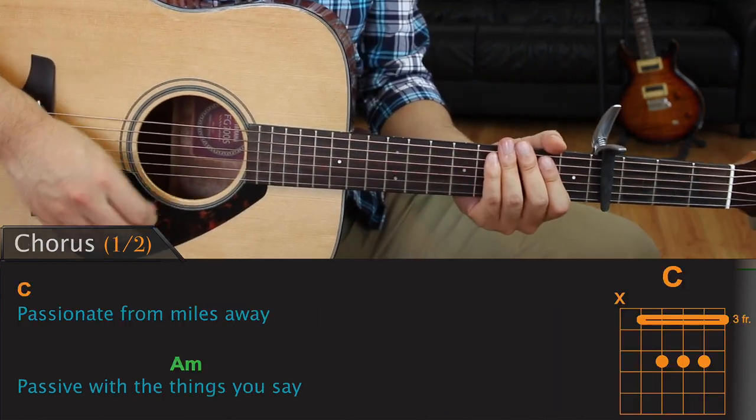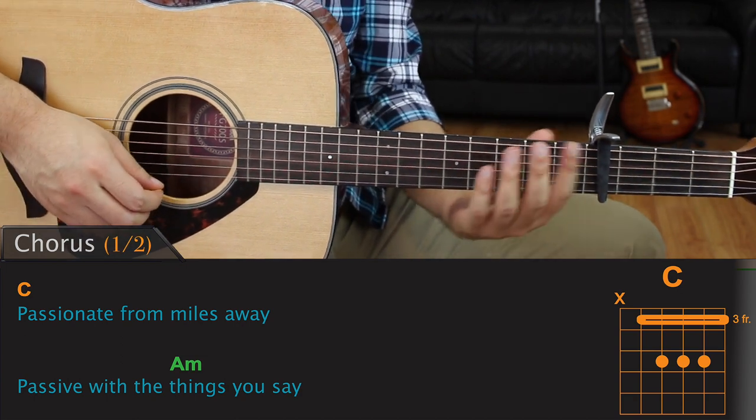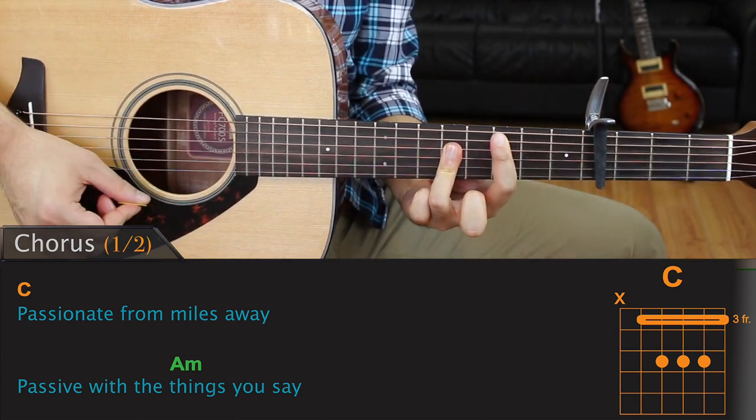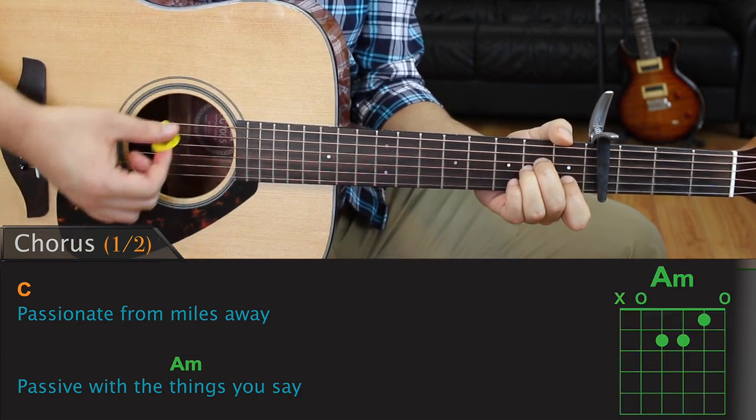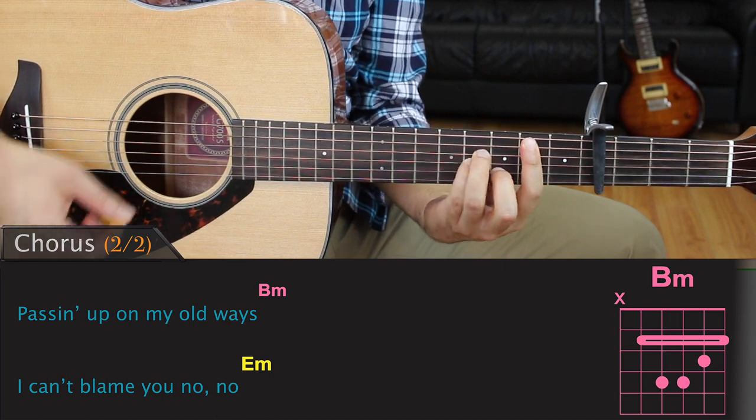Once you know the verse, the chorus is really easy. That's because we play the chorus just like the verse. We'll use the same chords, C, A minor, B minor, and E minor.